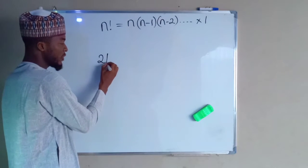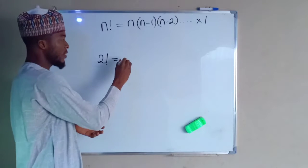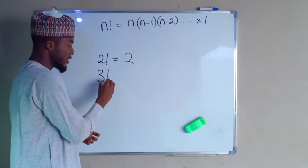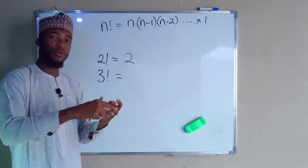If we are given 2 factorial, this means that 2 times 1 which is equal to 2. 3 factorial, this is the same thing as saying 3 times 2, which is 6 times 1 is also 6.